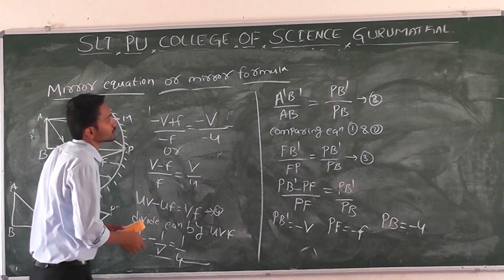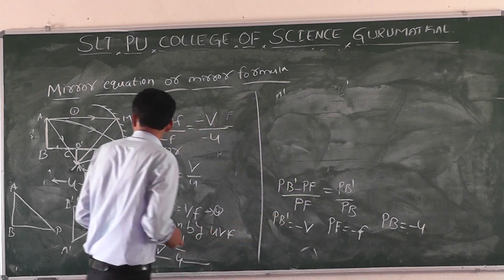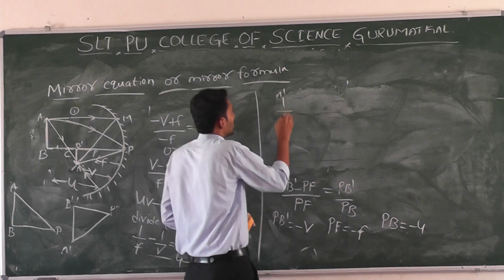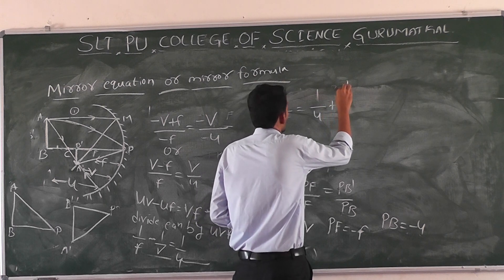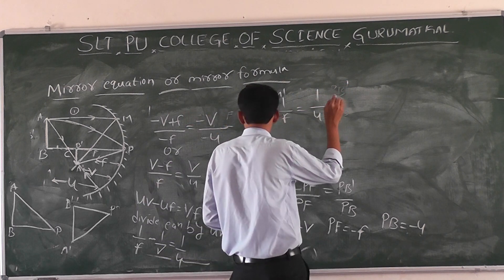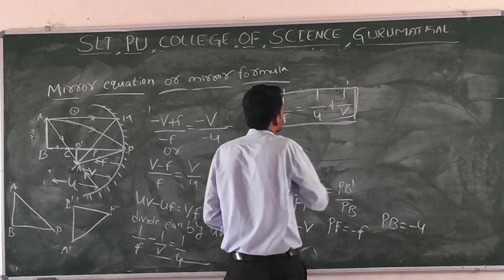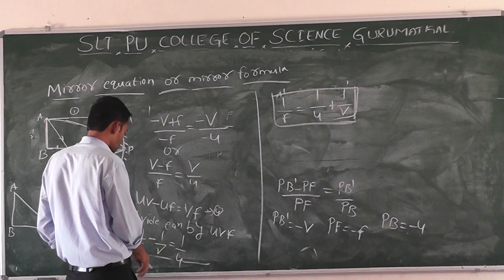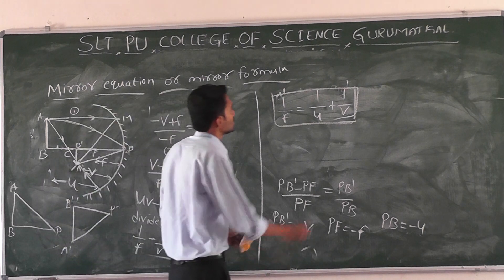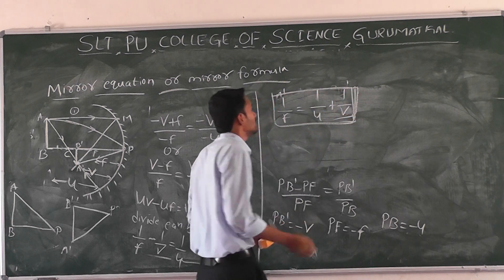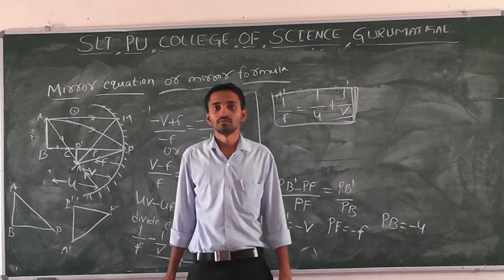Finally we get: 1/f = 1/u + 1/v. This is our final mirror equation or mirror formula. 1/f = 1/u + 1/v is the mirror formula. Thank you.